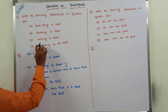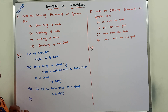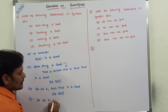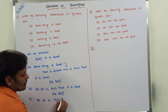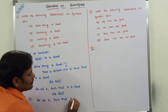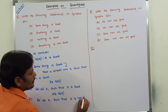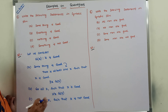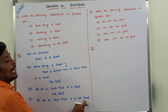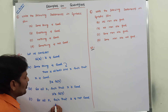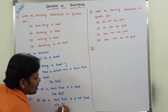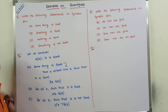The third statement is 'nothing is good.' This means everything is not good, which can be rewritten as: for all x, x is not good. Using the universal quantifier and negation, this is written as ∀x ¬g(x).